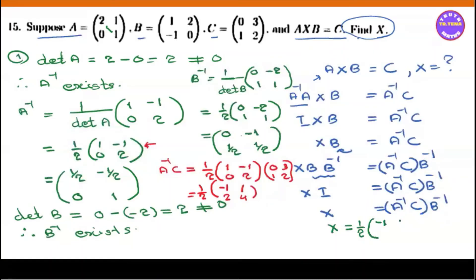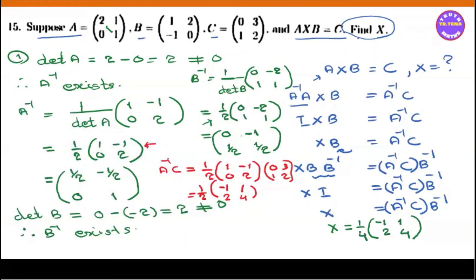The values are: minus one half, one half, one, two. That is B inverse. If you simplify, you can see: one half, one half, one half, one quarter.